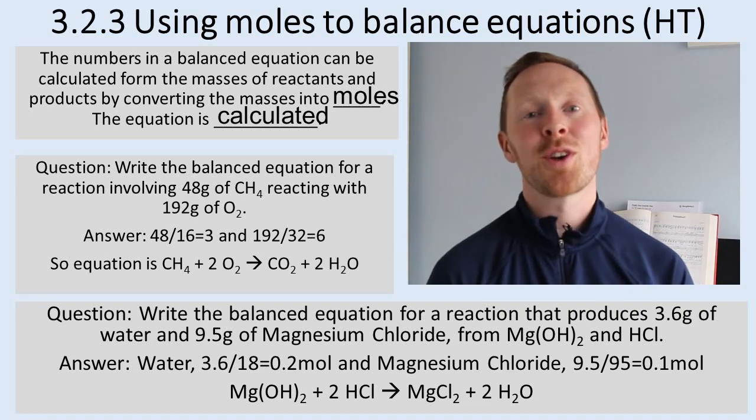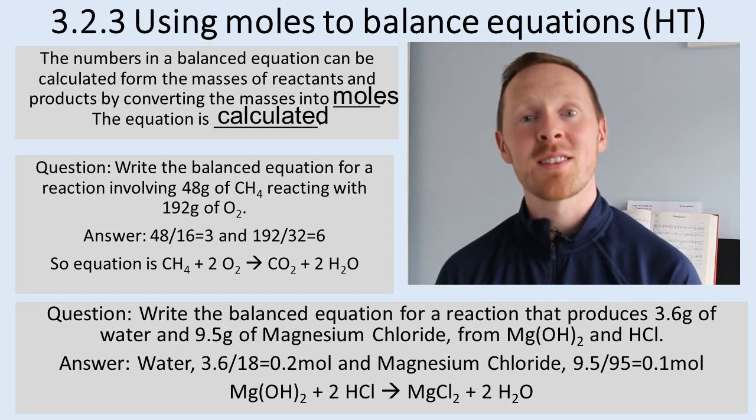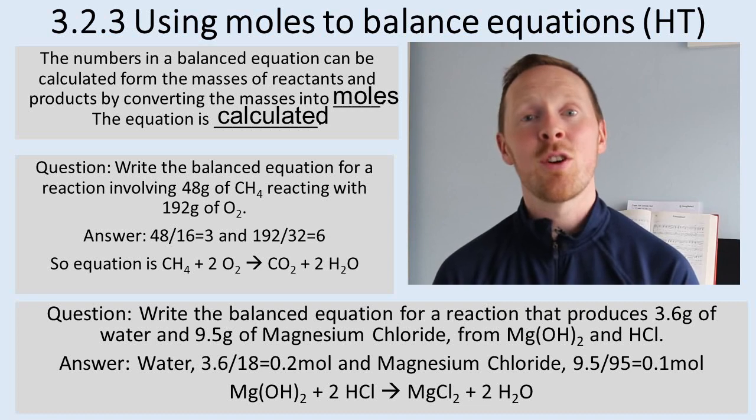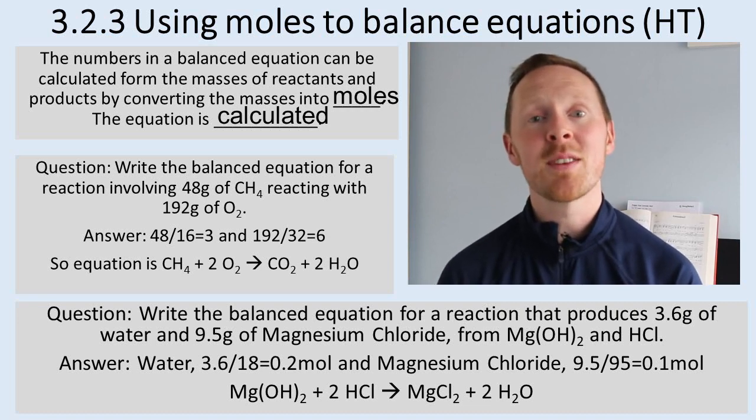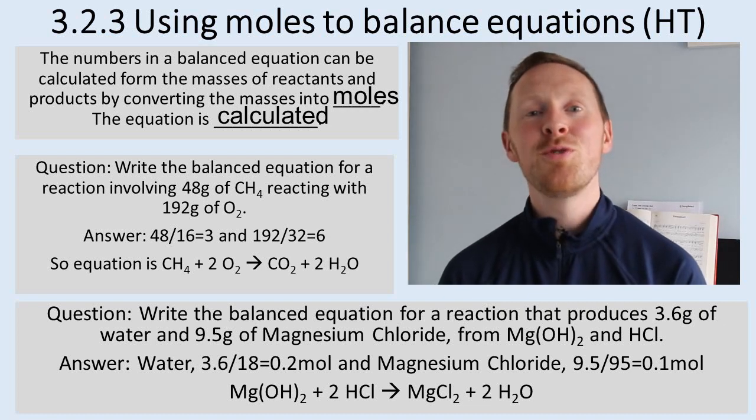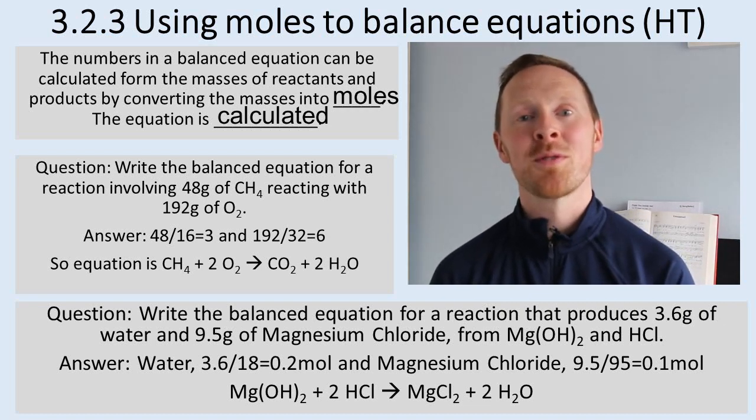Next you work out the moles of oxygen. So 192 grams divided by the relative formula mass of oxygen. Well oxygen is diatomic so each oxygen atom is worth 16 grams, so 16 times 2 is 32. 192 divided by 32 is 6. You have 6 moles of oxygen.